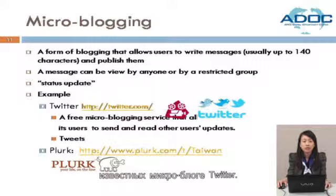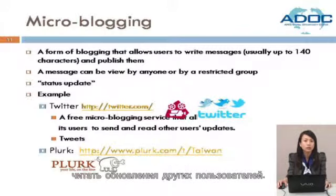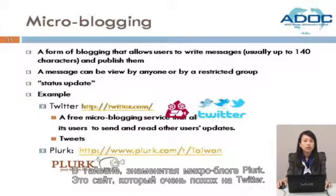Many microblogs provide short messages about personal matters, so it is called a status update. Similar to microblogs, many social networking websites such as Facebook or LinkedIn allow users to update their status. The famous microblog is Twitter. Users can send their messages and read other users' updates. The message in Twitter is called a tweet, which is a text-based post up to 140 characters. In Taiwan, the famous microblog is Plurk, which is a website very similar to Twitter.